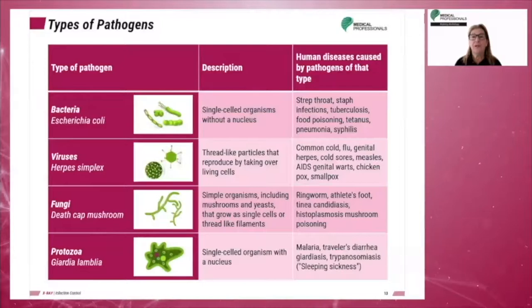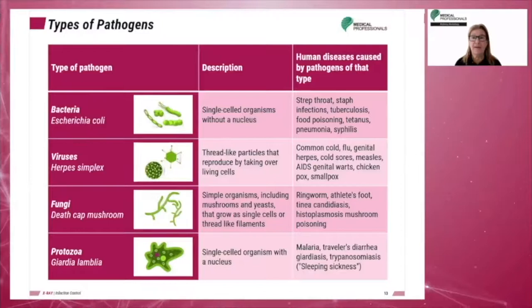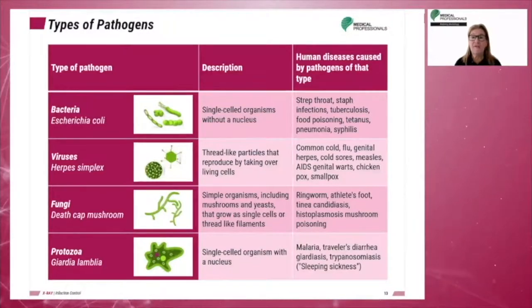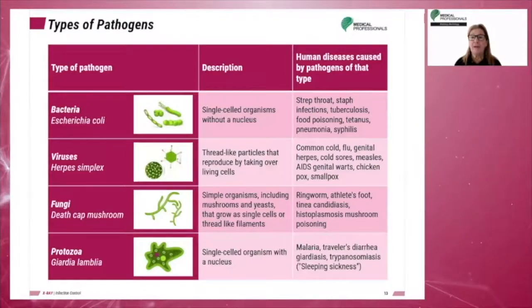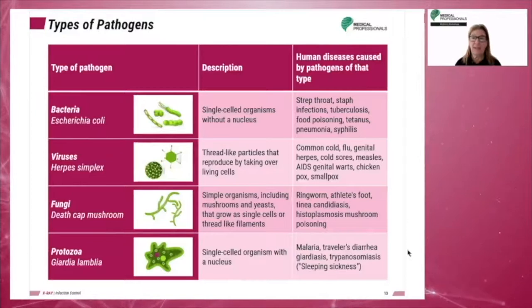There are four main types of pathogens: bacteria, viruses, fungi, and protozoan parasites. We will detail these types in the upcoming slides.